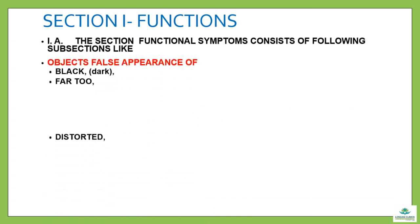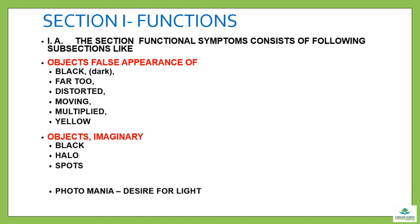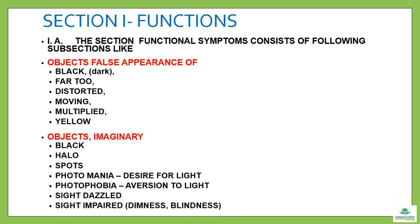Section 1a: functional symptoms. This section covers objects with false appearance — including black, far too, distorted, moving, multiplied, yellow. Then objects imaginary — including black, hollow, spots. Then photomania (desire for light), photophobia (aversion to light), sight dazzled, sight impaired, dimness, and blindness.